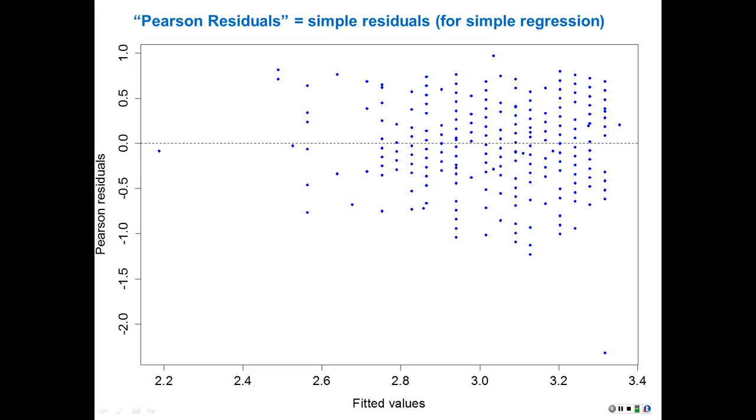So Pearson residuals are just simple residuals, just the number of points in the scale of whatever you're talking about, so in this case GPA points, that a point deviates from the regression line. This is essentially a representation of the regression line, and these dots are either above or below the regression line a certain distance. We like these plots for at least two reasons. Number one, they give us an idea of how well the line is fitting the data.